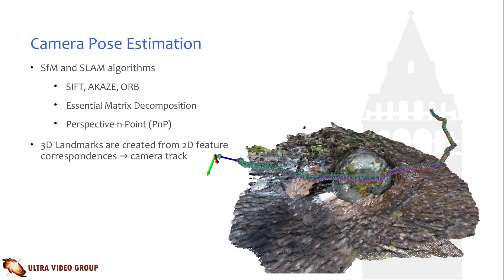The camera pose estimation stage consists of standard structure-from-motion and simultaneous localization and mapping techniques, and utilizes algorithms such as 2D feature detection and tracking using either AKAZE, SIFT, or ORB feature detectors, essential matrix decomposition, and perspective-n-point. 3D landmarks are created from the 2D image feature correspondences, which are in turn used to track the camera in 3D space. In the bottom right, the tracked cameras and the final point cloud are shown.